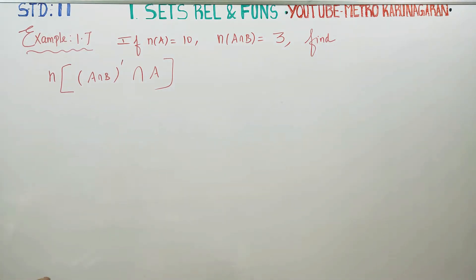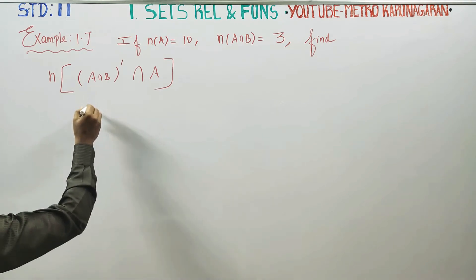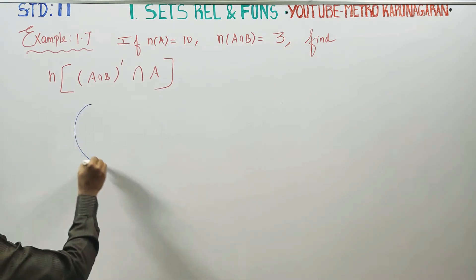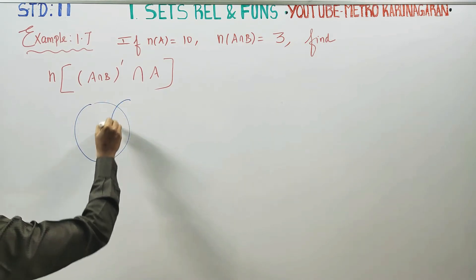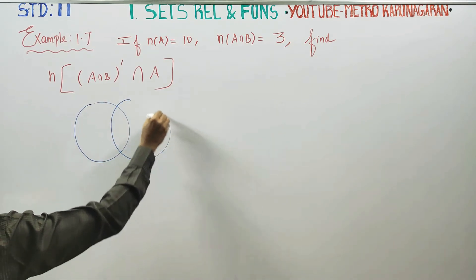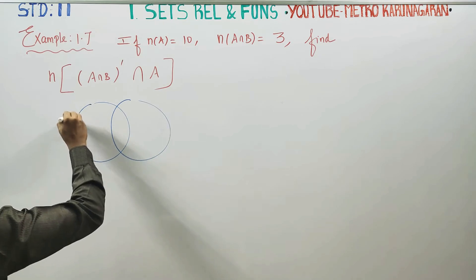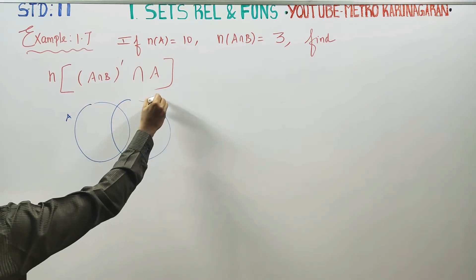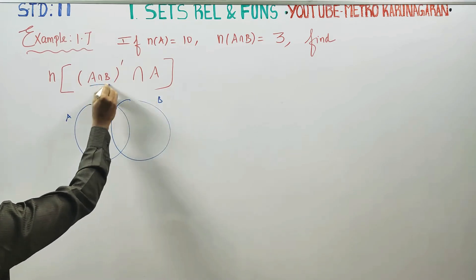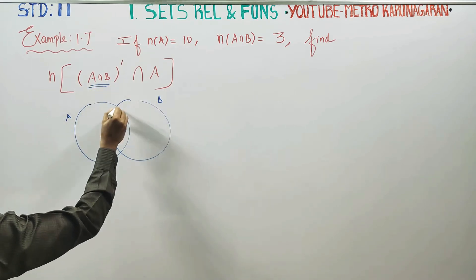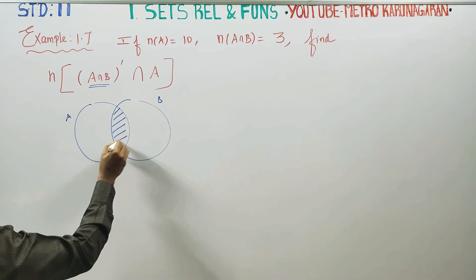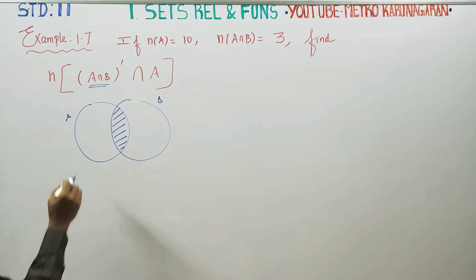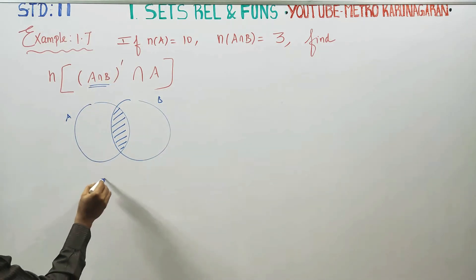First of all, what is A intersection B? We have to find the value of A intersection B. This is A intersection B. First A intersection B — this is my A intersection B.